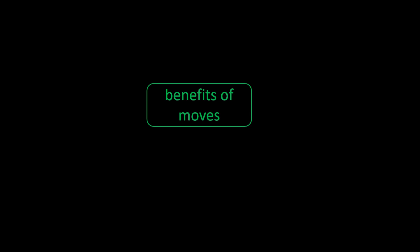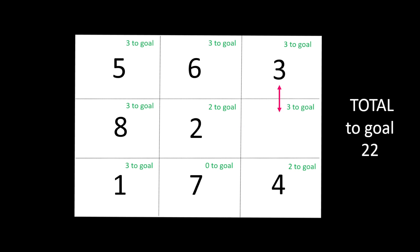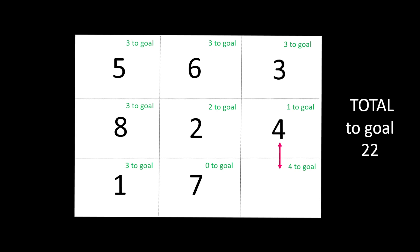We can see the benefits of some moves. For example, if we move tile two to the space on the right in the middle, we start with a total of 22 but when we move it we have a total of 20. The scores stay mostly the same except for the two tile, and the amount of moves to the goal is reduced by two. We could also move the number three tile there, which would also reduce the total by two.